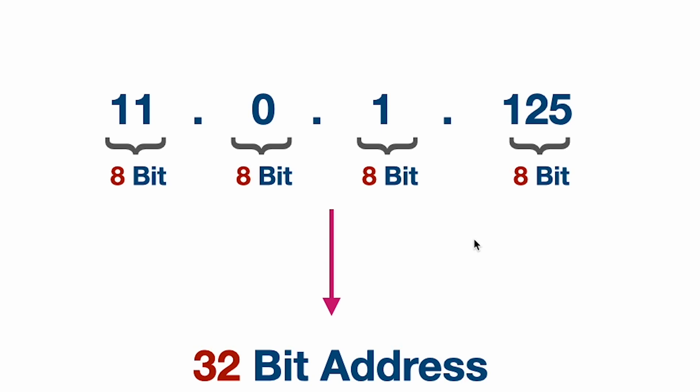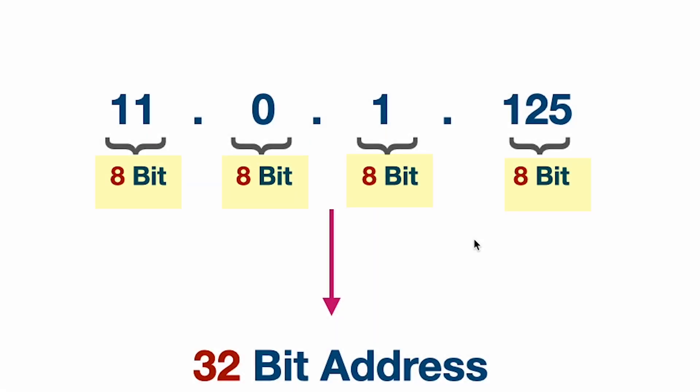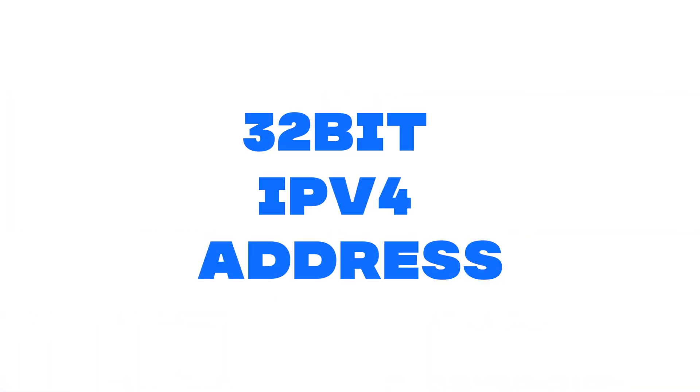Now let's talk about how IP addresses are formed. As you can see on the screen, we have four numbers separated by four dots. In digital computing we use binary — 0s and 1s — and each of those four numbers consists of 8 bits. So there are four 8-bit groups separated by periods, and if you sum all four 8-bit values you get 32 bits total. This 32-bit value is called a 32-bit IPv4 address, which is assigned to any device connected to the internet.